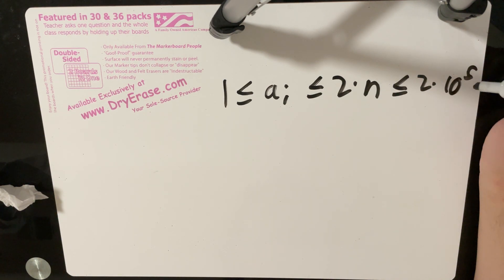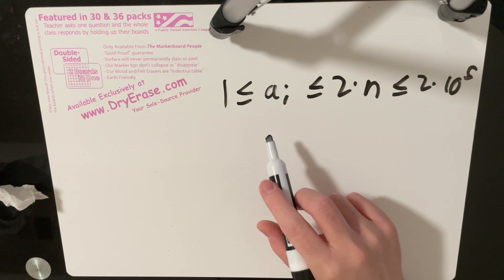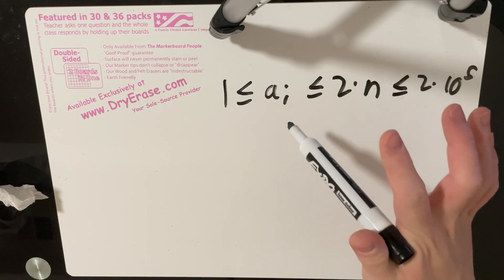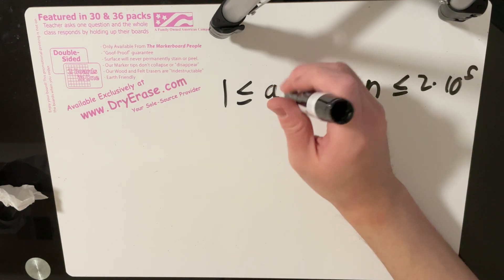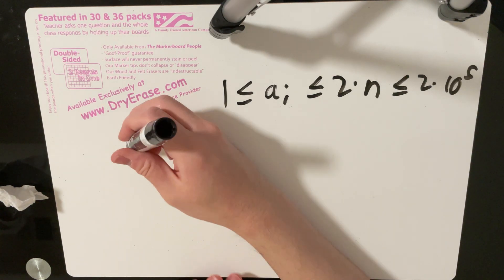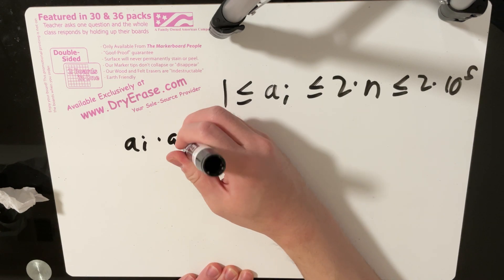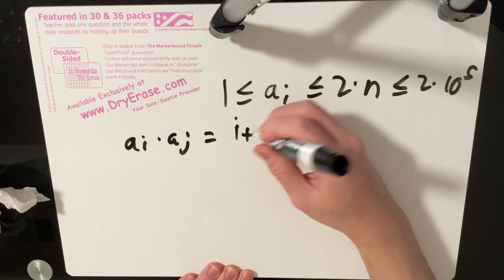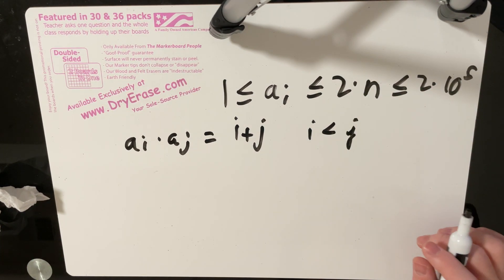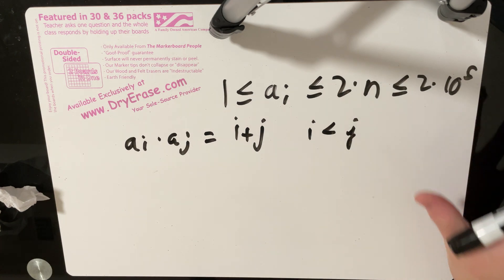And so what this means is that it might be helpful to instead of keeping track of the array as in this ai is equal to some number, it might be better to think of it like this. Keep in mind that all we're doing is we're counting the number of distinct pairs such that ai times aj is equal to i plus j, where i is strictly less than j.